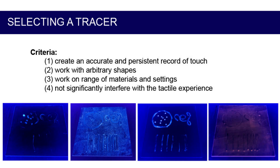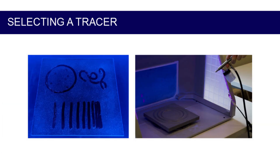In the subtractive method, the UV material was applied to the object, and touches became visible through the removal of UV material as a person touched the object. In the additive method, the UV material was applied to the person's hands, and touches became visible through the addition of UV material to the object. We compared performance through a simple touch pattern and evaluated outcomes using visual metrics such as luminance and contrast. Through this process, we found that using glow germ powder applied to the model with an airbrush using the subtractive method was the best option.